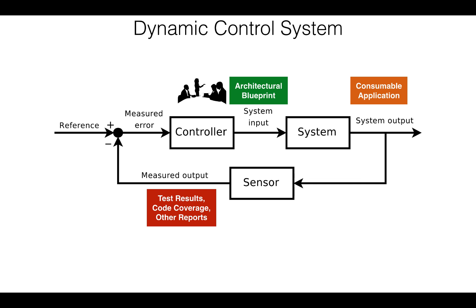So the architecture is fed into the system, which produces either a packaged application or a running software service. The form of the measured output fed back by the sensor depends on which stage of the platform you're in. For instance, early on it could be unit test results; at a later stage, it could be integration or end-to-end test results. As we go through the series, you'll see that we implement the SMP as a concentric set of dynamic control systems, where the inner loops provide fast feedback while the outer loops provide more rigorous feedback.